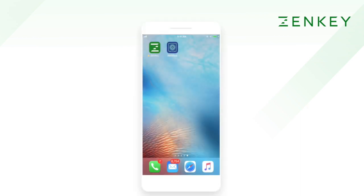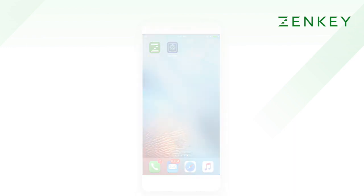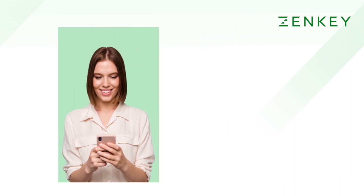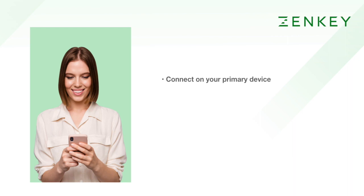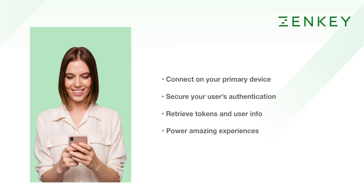This ZenKey Quick Start covers performing an authorization request on your primary mobile device — that is to say, the same device on which you have installed your ZenKey app. We'll see how you can use the ZenKey iOS SDK to issue a request for a user to authenticate with ZenKey, and walk through how to safely and securely retrieve that user's ZenKey tokens and user info from the ZenKey services to enable great experiences within your application. While this Quick Start uses the ZenKey iOS SDK, the topics we discuss are applicable to any application running on the same device as your user's ZenKey carrier mobile app.